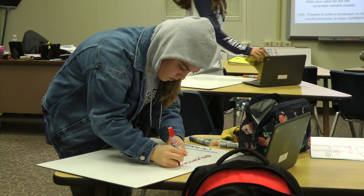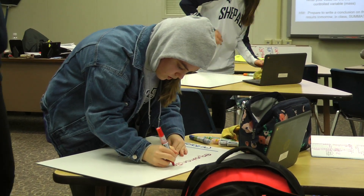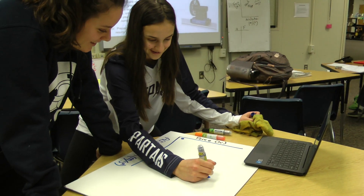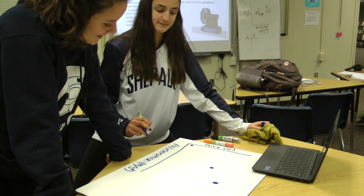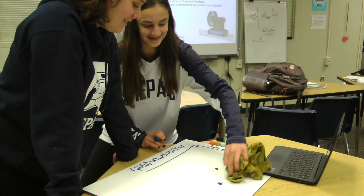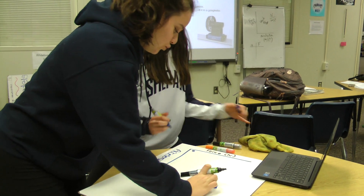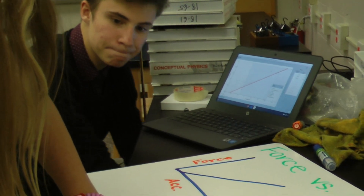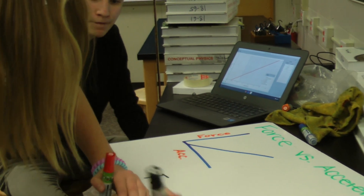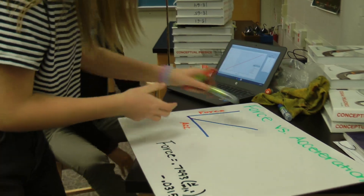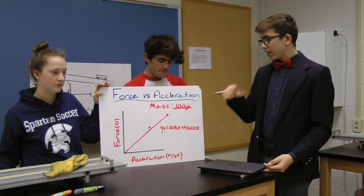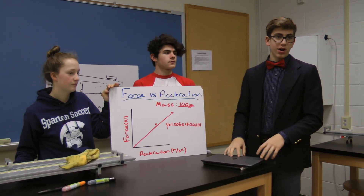The idea was to graph force versus acceleration to see what the relationship between those two things was. So once they got their data for force and acceleration, they constructed a graph using a different computer program — there's a lot of technology in this lab. They used graphical analysis for that. What they got out of it, provided they had worked carefully, was a straight line through the origin.